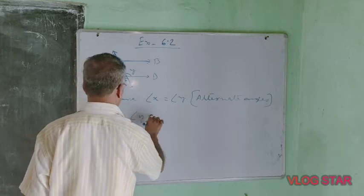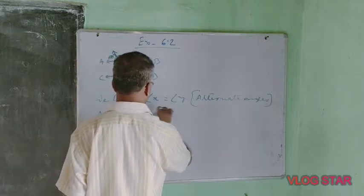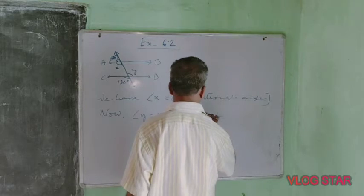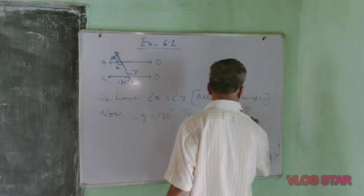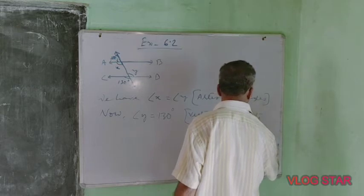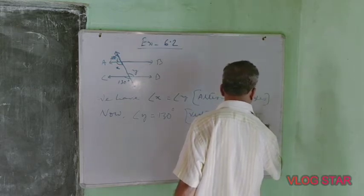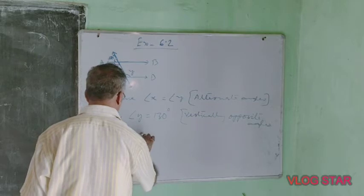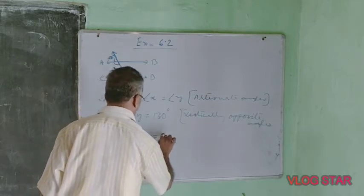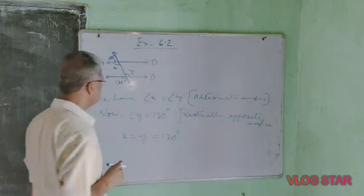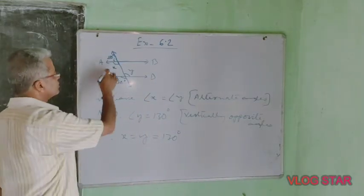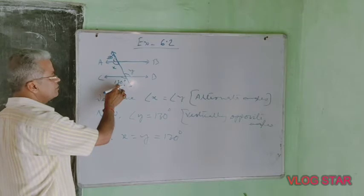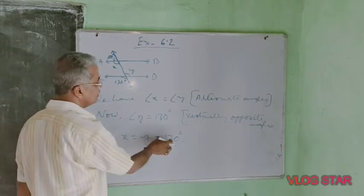Writing the solution: angle y is equal to 130 degrees by vertically opposite angles. Therefore x is equal to y, both x and y are equal as alternate angles, and y is vertically opposite to the 130 degree angle. So y is 130 degrees, and ultimately x is equal to y is equal to 130 degrees.